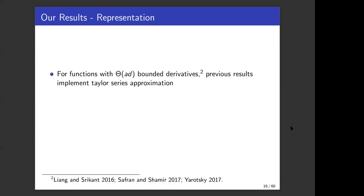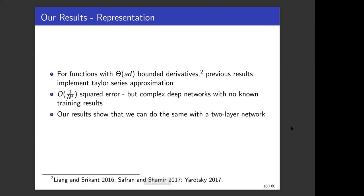Previous results use Taylor series approximation for such functions. If you have theta ad bounded derivatives, you implement Taylor series expansion by implementing addition and multiplication with complex deep networks. They do achieve one over n to the a kind of squared error, but they have complex deep networks with no known training results, whereas we show similar results under similar conditions with two layer network, which can be trained very easily.